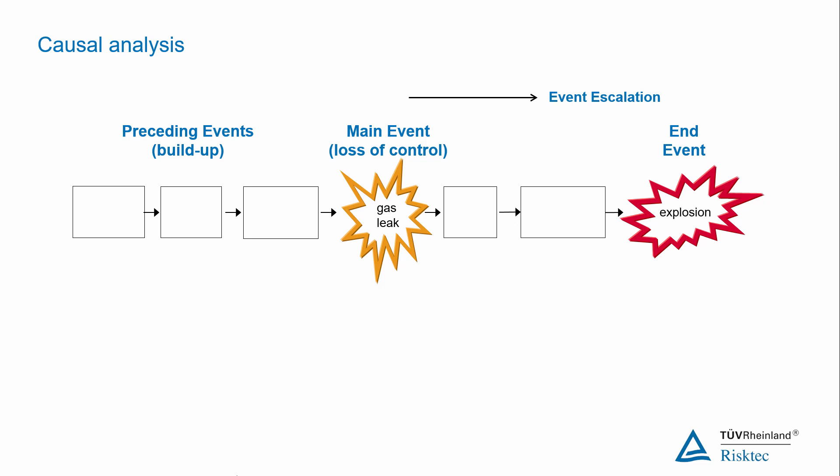So the first preceding event could be instruction issued to open a valve on the gas line to commence export operations.